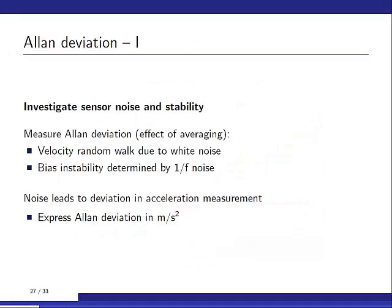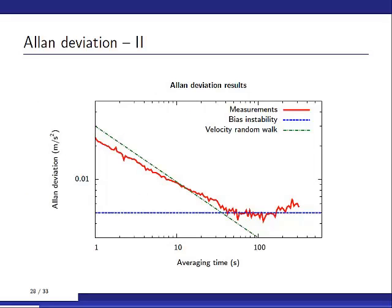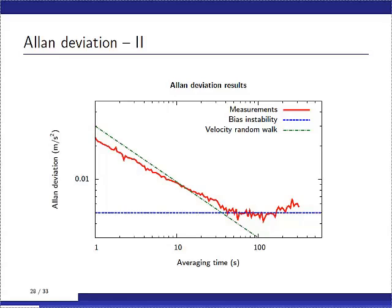If you go a bit further about the noise, you can also apply the Allan deviation method for analysis. And since this is an accelerometer, you can look at the velocity random walk and also the bias instability. And the Allan deviation is expressed in meter per second squared, and these are the results. Red are the measurements, blue is the bias instability, and in green, the velocity random walk. And you see that you can average for about one minute, and after that, you will not gain anything anymore.